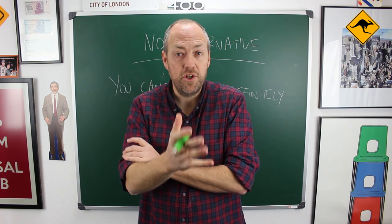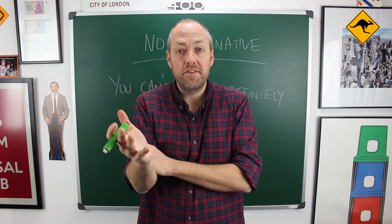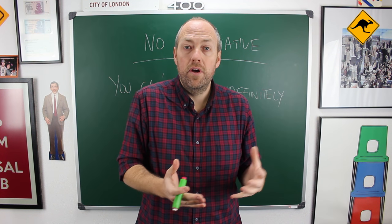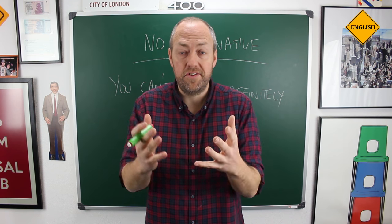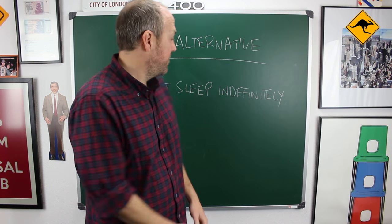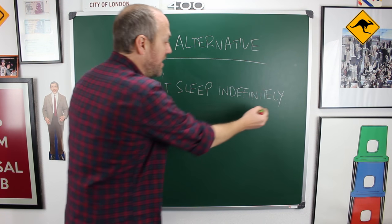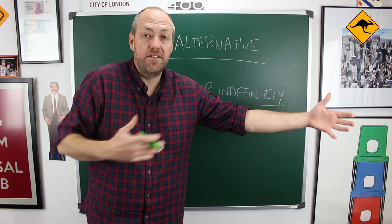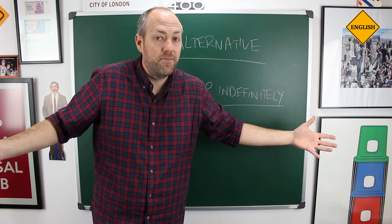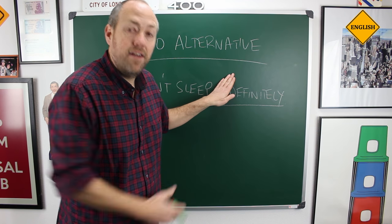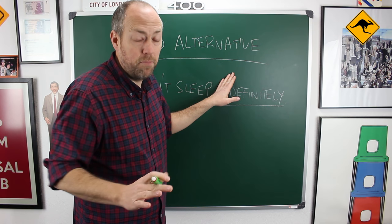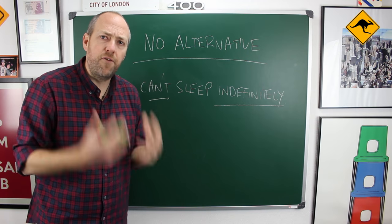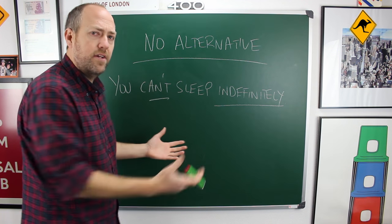Sometimes in English we have no option but to use the double negative because some words only exist in a negative form — they have no positive form — so we are forced to use multiple negatives. For example, the word 'indefinitely' means for a period of time that we don't know how long it is. The positive form 'definitely' means something completely different, so in this case we are obliged to use a multiple negative.